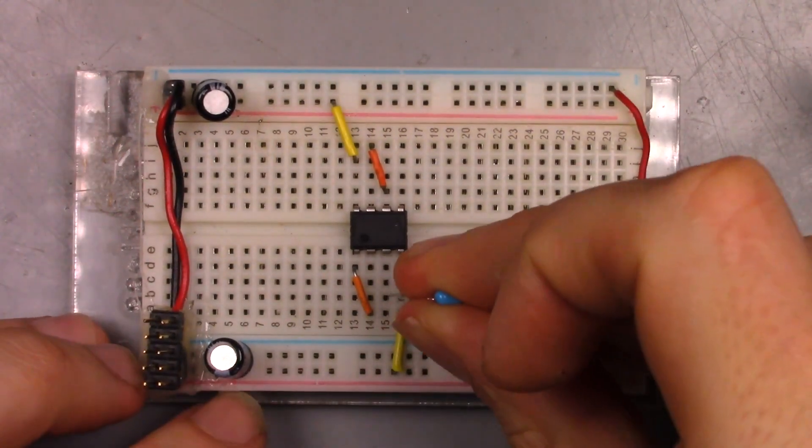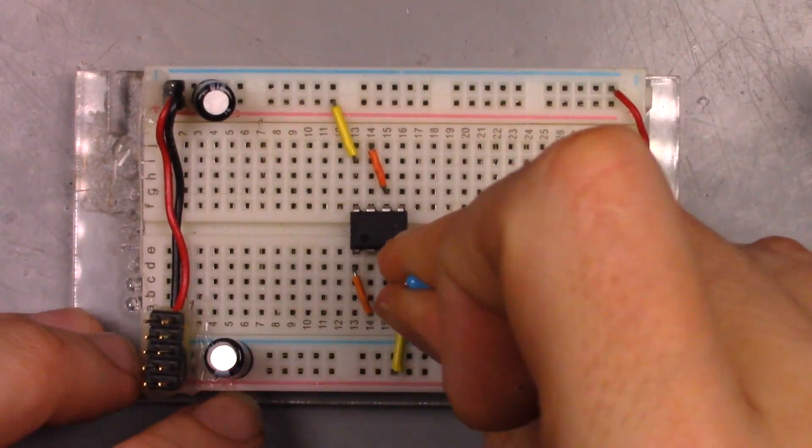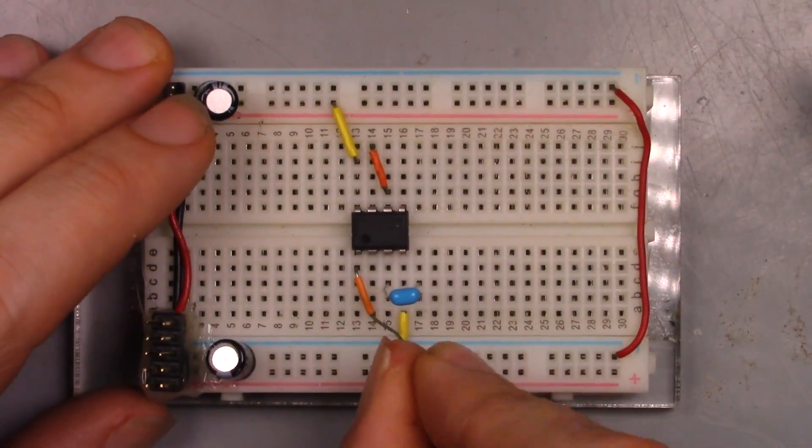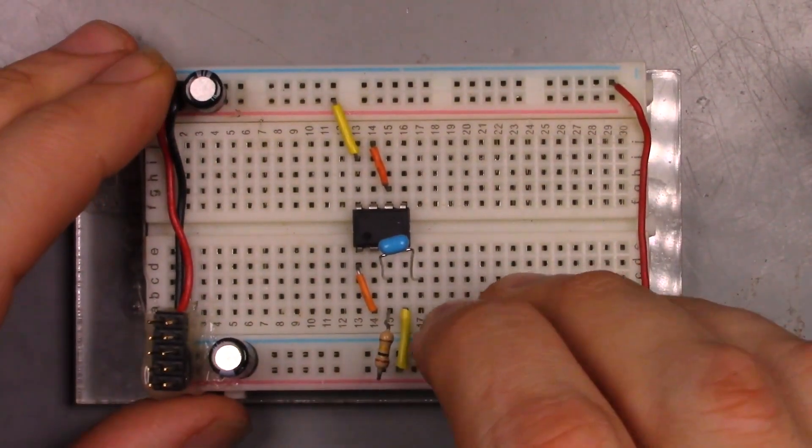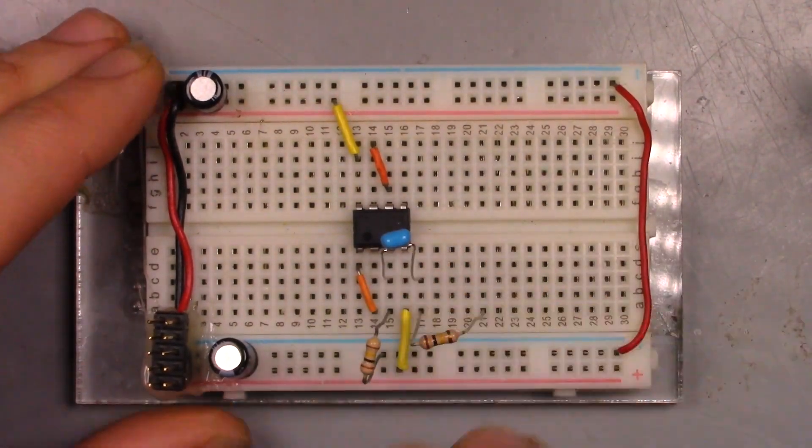Then a 10 microfarad capacitor and a ground reference resistor. Next are the four input resistors. Make sure each one connects to its own separate bus.